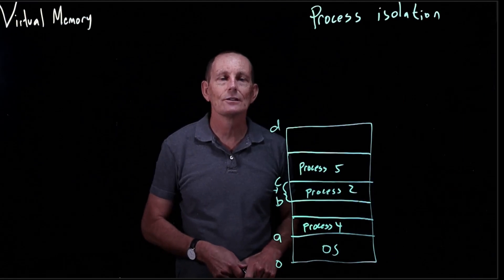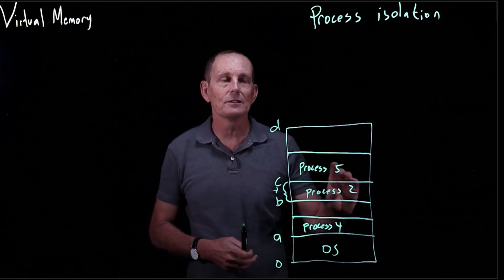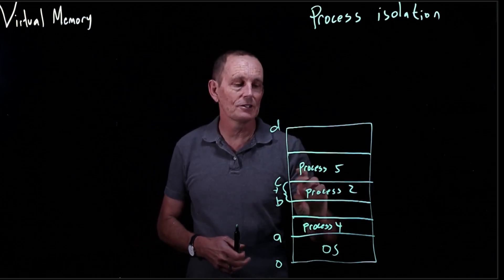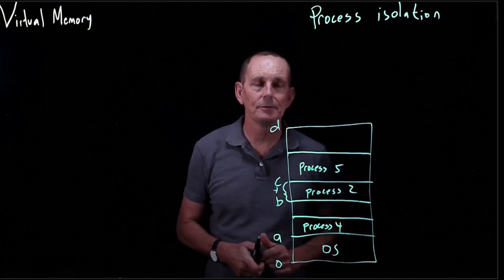How are we going to provide process isolation? We want to ensure that one process can't read or write the memory from any other process. For instance, process two here can't read or write outside of its bounds.